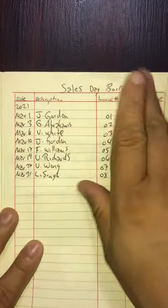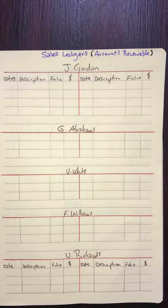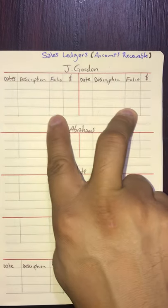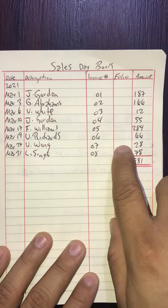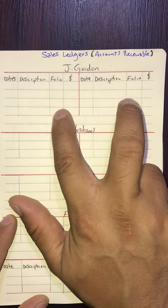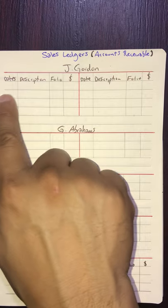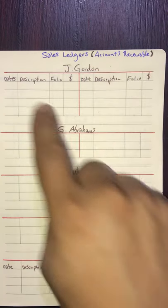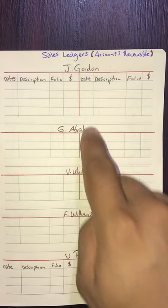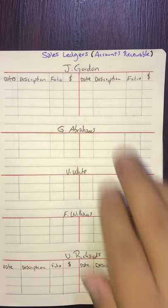We will take these transactions and post them to their respective ledgers or T-accounts. You'll notice that the T-accounts here have a new column you haven't used before in this class — the folio column, which you also have in the sales day book. Effective today, when you draw your T-accounts, you need to include this folio column.